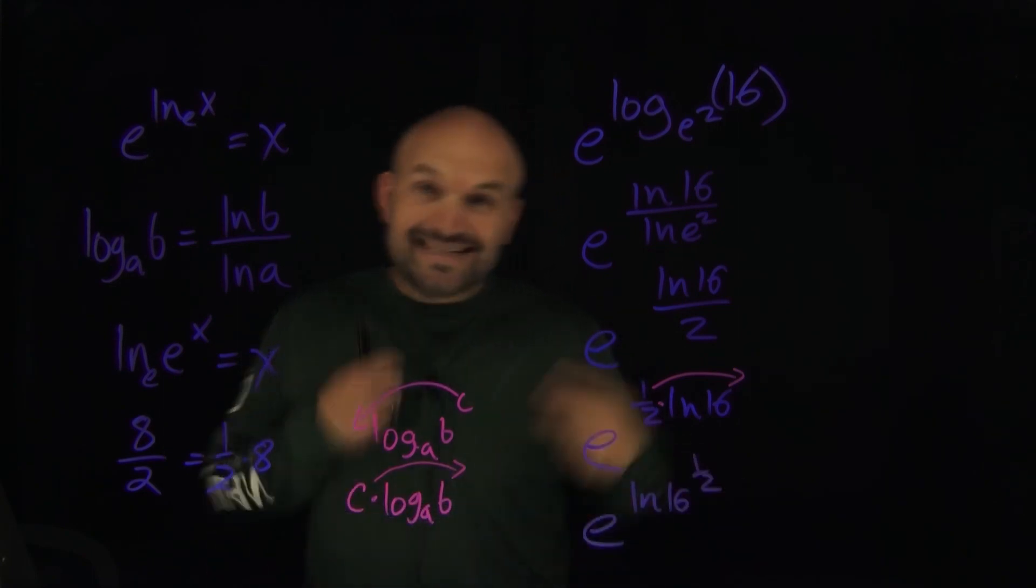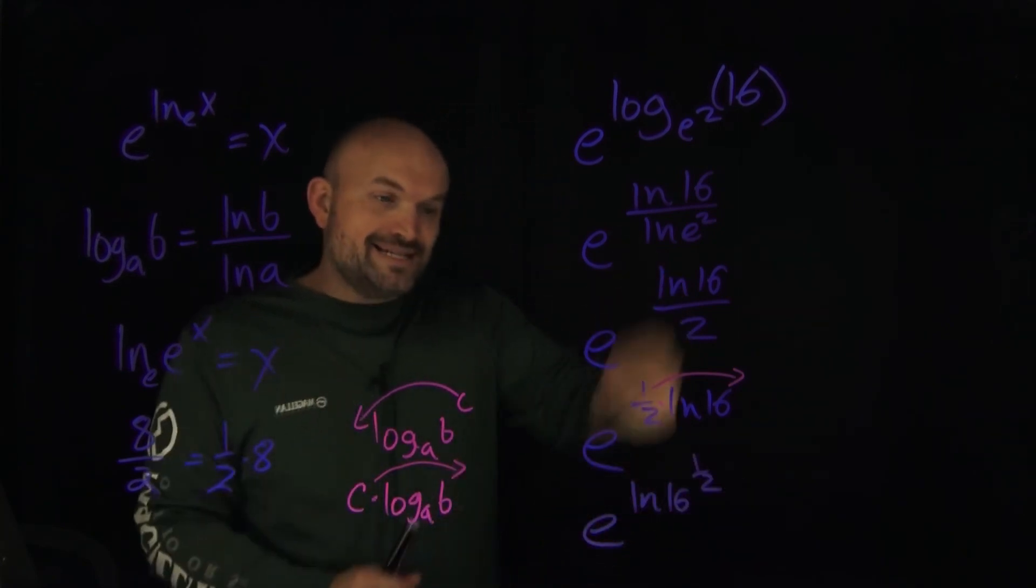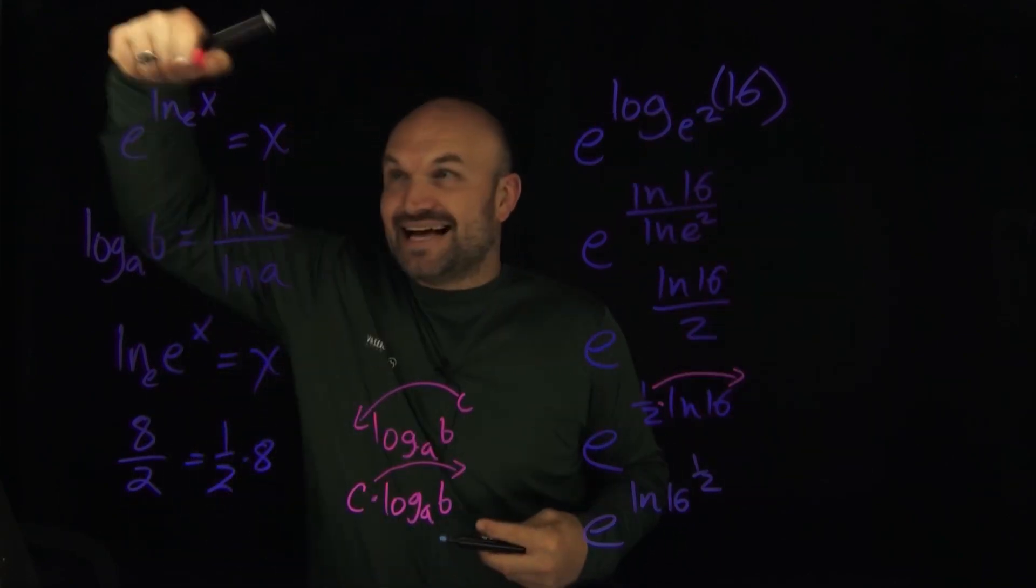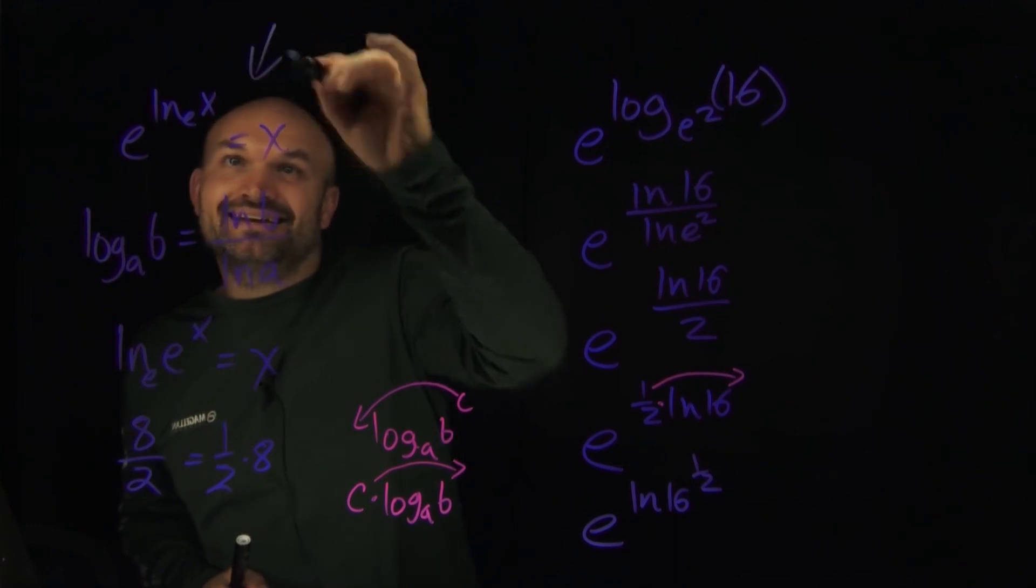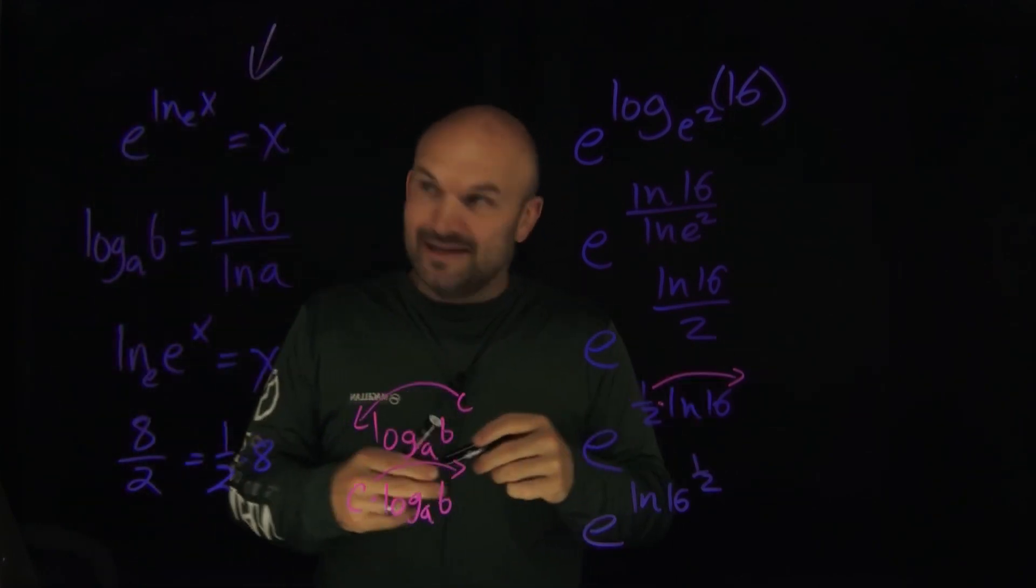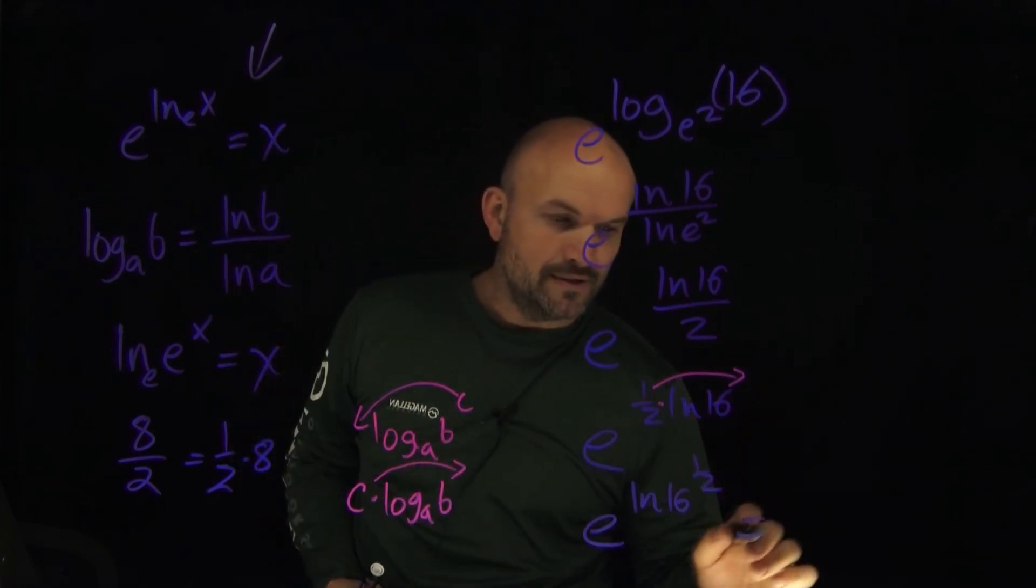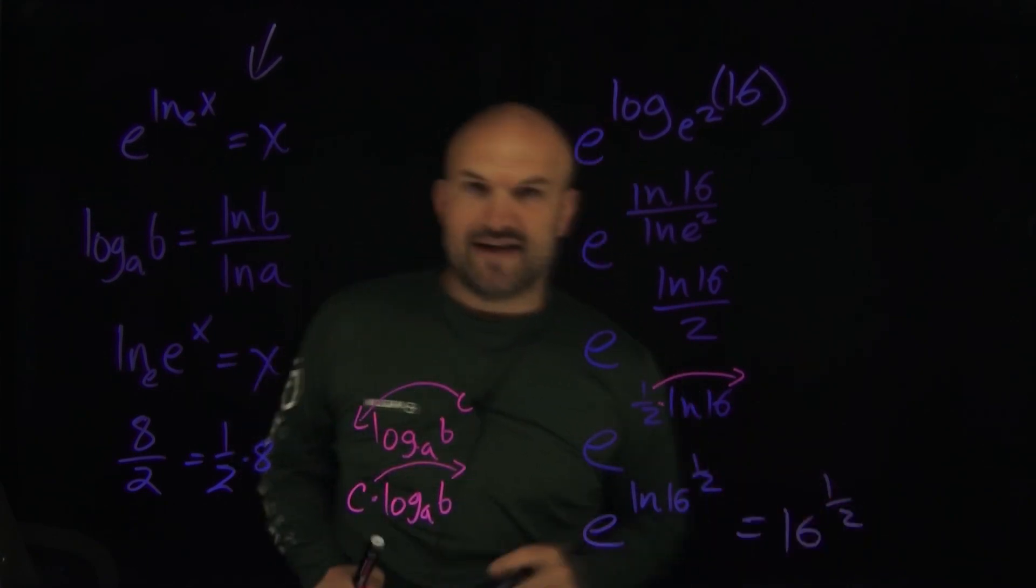And that's going to be important because now when I go ahead and do that, look what happens. I now have my e raised to the ln of my argument 16 raised to the 1 half power. That's exactly what I'm looking for here. That's what I wanted. That's what I needed. So now e to the ln of e, I'm just going to look at my argument, which is now just going to equal to a 16 to the 1 half power.